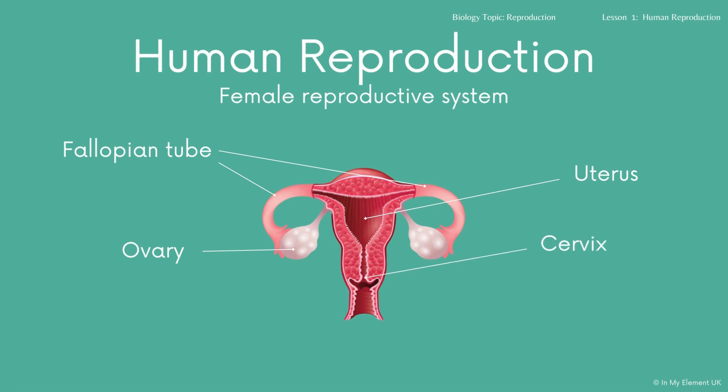If you move down a little bit, you can see the cervix — that is the entrance to the uterus from the vagina. The cervix stays quite small unless a female is preparing for birth, at which point it will widen to allow the baby to move out.